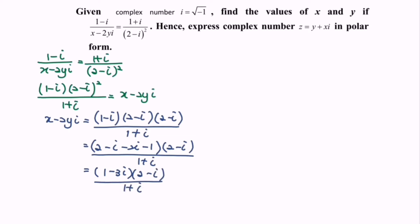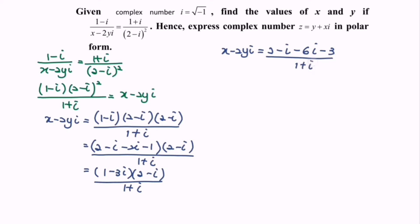Next expand the numerator. So we will have x minus 2yi equals to 2 minus i minus 6i minus 3, over 1 plus i. So rewrite the expression: negative 1 minus 7i, over 1 plus i.